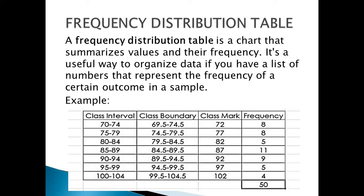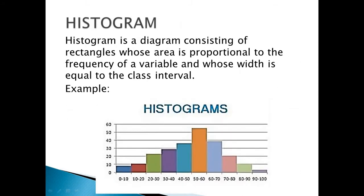Frequency is the number of occurrences of an observation in every class or group. Next is histogram. A histogram is a diagram consisting of rectangles whose area is proportional to the frequency of a variable and whose width is equal to the class interval. In this example, the horizontal axis is the class boundary and the vertical axis is the frequency. Notice that in a histogram, there are no gaps between bars and the width of each bar is always equal to the class size or class interval width.